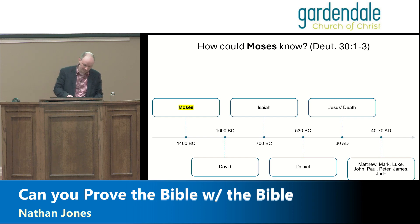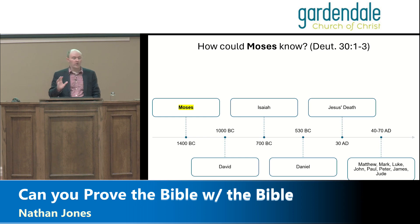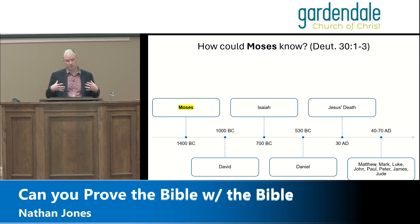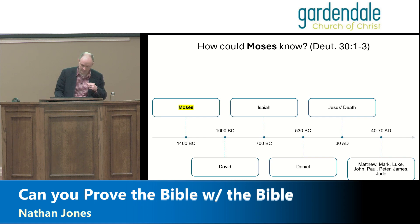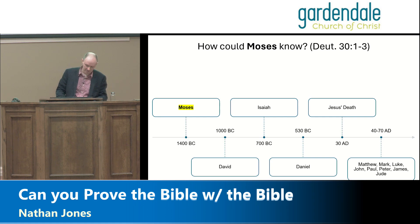Let's start with Moses in Deuteronomy chapter 30. Follow along and think about the timeline — when things are said, when they come to be, and how such claims could be made. Moses is the leader of Israel, Israel is about to go into the promised land, and Deuteronomy is essentially his farewell sermon. Verse 1: 'So it shall be when all these things have come upon you, the blessing and the curse which I have set before you...'